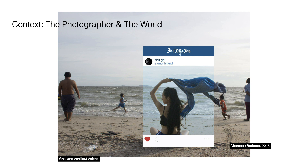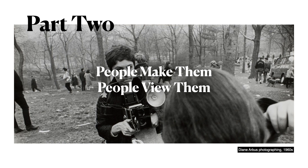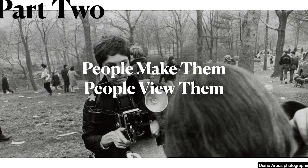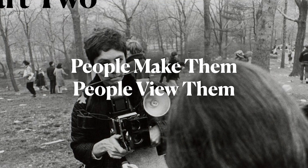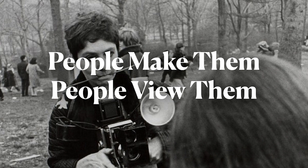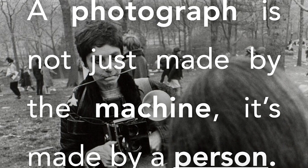Part 2: People make them. People view them. So a photograph is just as able to lie as the person who created it is able to lie. The personal bias of the person creating the photograph brings a subjective perspective to the photographs they create. Similarly, everyone who views photographs has various biases that change their interpretation of the image. The bias and intention of the photographer is key, because a photograph is not just made by a machine — it's made by a person.